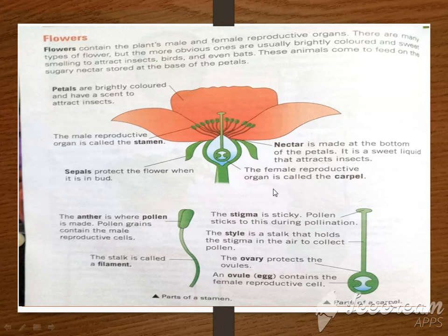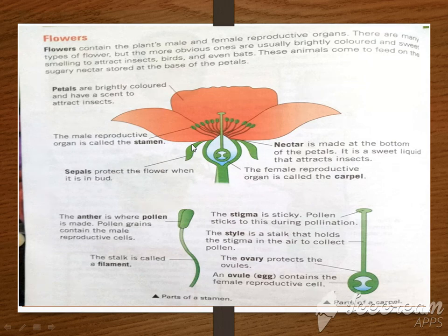The female reproductive organ is called the carpel. The female reproductive organ has four parts: sepals, carpel, ovary, and ovule. The sepals' work is to protect the flower when it is in bud form. When you see flowers growing, they are present in a bud form.